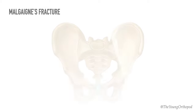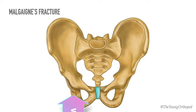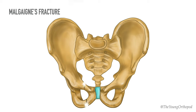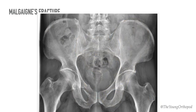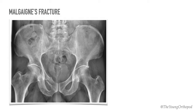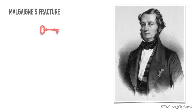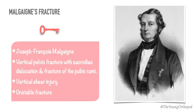Malgaigne fracture is a type of pelvic fracture resulting from a vertical shear injury, with a combination of pubic rami fractures anteriorly and sacroiliac joint or ilium fractures posteriorly on the same side. This leads to disruption of both the anterior and posterior arch, resulting in a disconnected hemipelvis. It is an unstable fracture characterized by loss of both vertical and rotational stability of the pelvic ring. The mechanism is high-energy impact to the pelvis from front to back. It is named for Joseph-François Malgaigne, a French surgeon and medical historian.